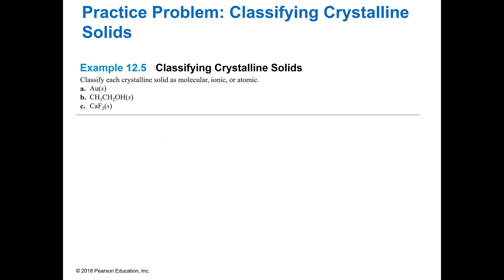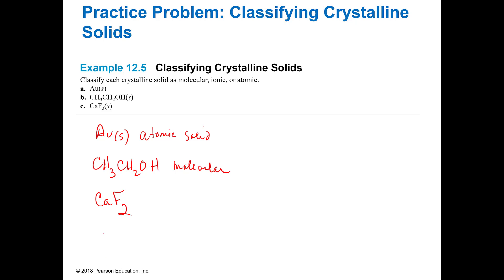So how do you classify the crystalline solids — molecular, ionic, or atomic? All you do is ask yourself: gold is not a molecule, not an ion — it is an atom, therefore it is an atomic solid. CH3CH2OH — ethanol — it's a molecule, not an ion, so it's going to be a molecular solid. And finally, CaF2 has a metal and a non-metal, and our previous knowledge tells us those are ions, plus and minus — so that gives us an ionic solid. Simple as that.